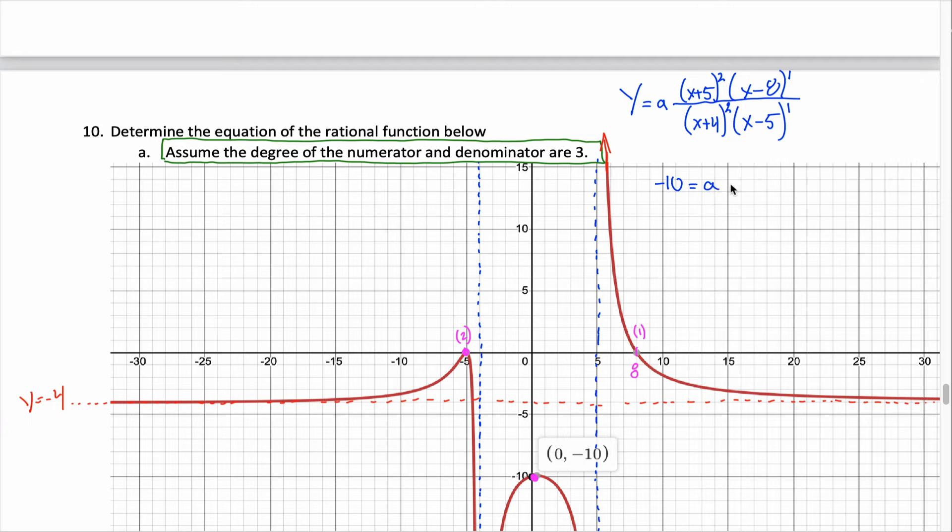By plugging in 0 and negative 10 into this equation, I can come up with an equation that only has one unknown, the number a, and a bunch of numbers. 5 squared from 0 plus 5. 0 minus 8 to the first power is negative 8. 0 plus 4 is 4, which needs to be squared, and 0 minus 5 is negative 5 raised up to the first power. I could do a little bit of arithmetic here. You might first notice that we have a negative on the top and the bottom, so those cancel. So what's going to be left is going to be a positive number.